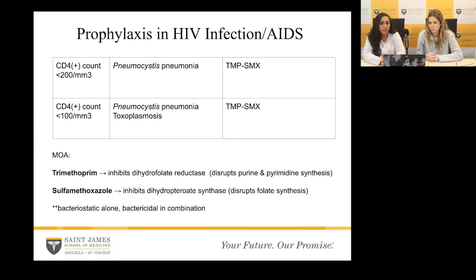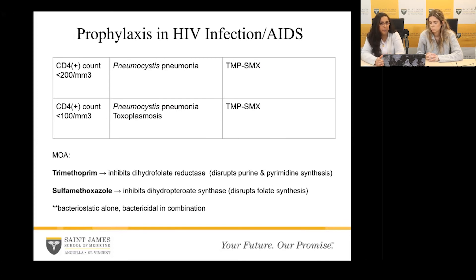Regarding the mechanism of action: trimethoprim inhibits dihydrofolate reductase, which disrupts purine and pyrimidine synthesis so no DNA or RNA is produced. Sulfamethoxazole inhibits dihydropteroate synthase, which also disrupts folate synthesis — another part of the purine-pyrimidine pathway — just a different mechanism to achieve the same goal. When given alone, each drug is bacteriostatic, preventing bacterial replication but not killing the bacteria. Combined, trimethoprim and sulfamethoxazole become bactericidal and actually kill the bacteria.